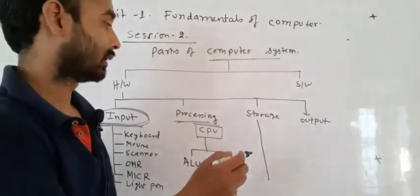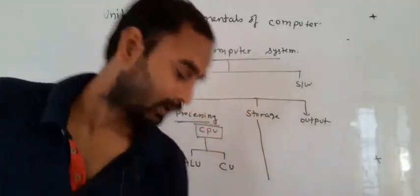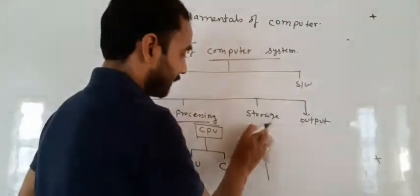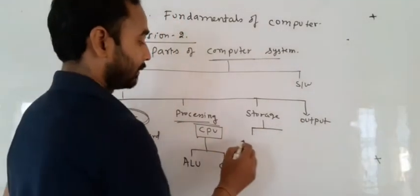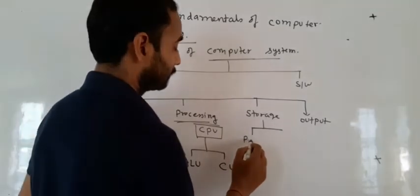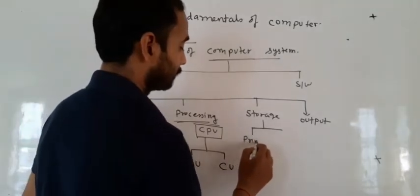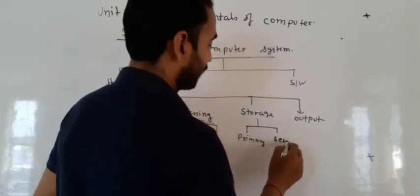There are two types of storage devices. First is called primary devices, and second is called secondary.